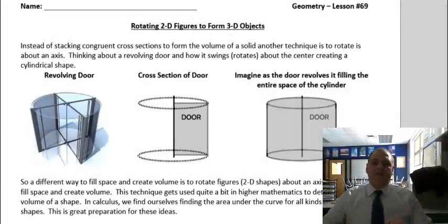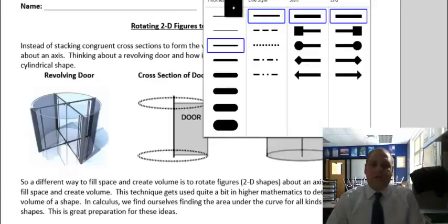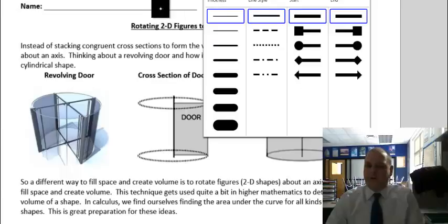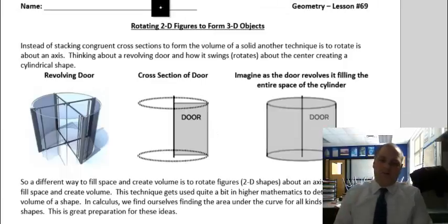Lesson 69: rotating 2D figures to form 3D objects. This is something that you may need to do, usually on part one of your exam. These questions, once you get used to them, they're pretty simple.